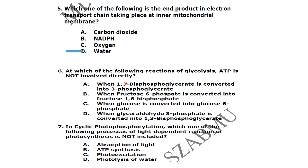At which of the following reactions of glycolysis is ATP not involved? It is option D — when glyceraldehyde-3-phosphate is converted into 1,3-bisphosphoglycerate.